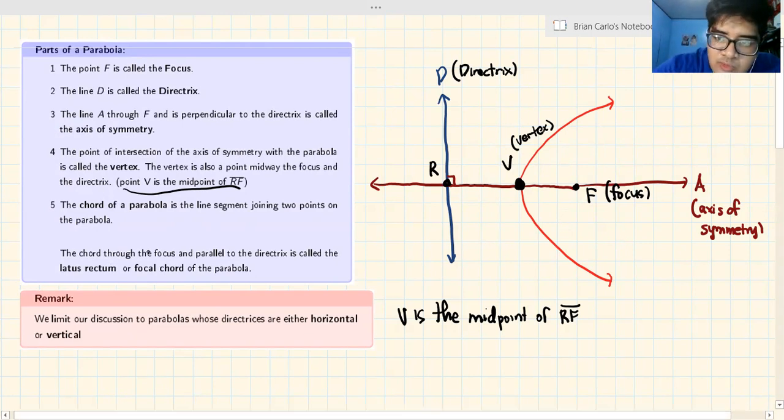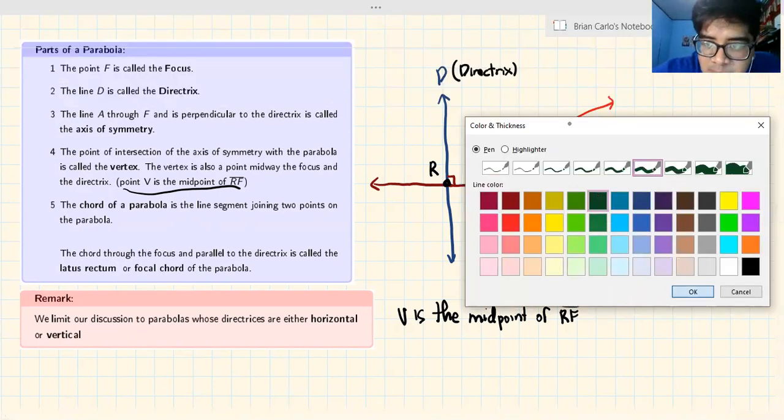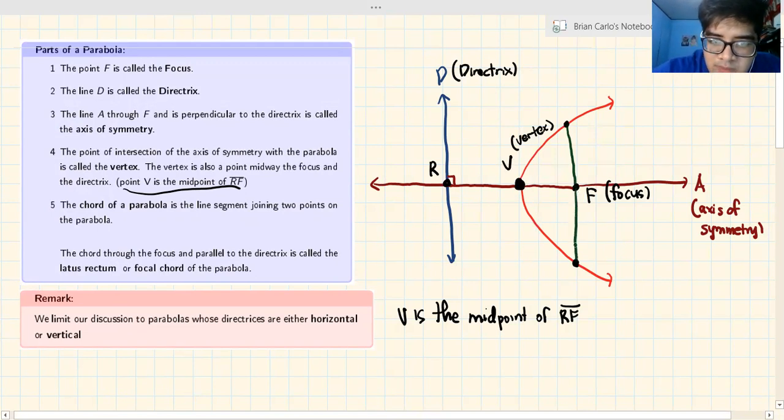The chord through the focus, this is the focus, and you have points here that happen to be opposite each other. Change the color to green. When you pass through the focus, a chord that goes through the focus and parallel to the directrix. The green is parallel to the blue. They are indeed parallel. It's called the latus rectum or the focal chord. This passes through the focus, that's why it's called the focal chord.